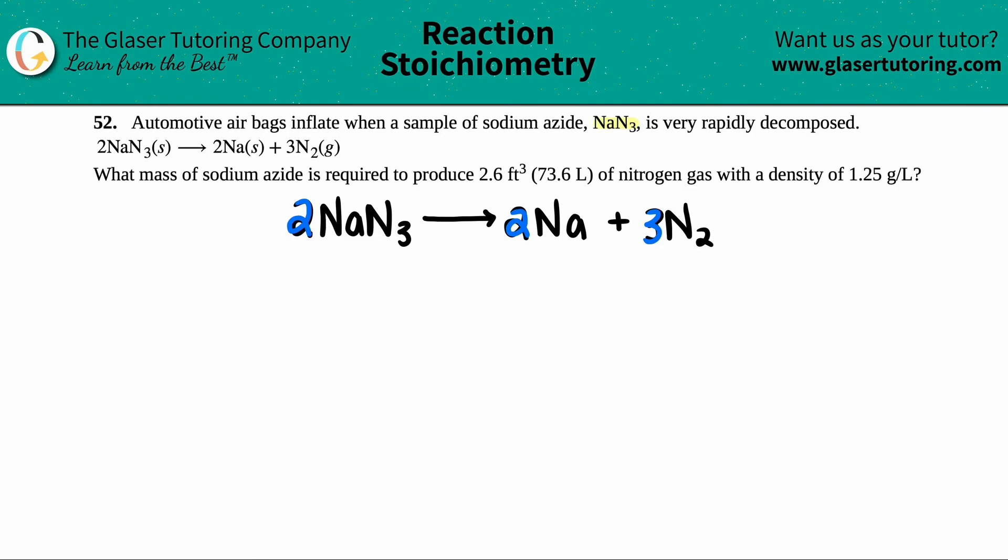Now here's the question. It says, what mass of sodium azide, which is the NaN3, is required to produce 2.6 feet cubed or 73.6 liters of nitrogen gas that has a density of 1.25 grams per liter?